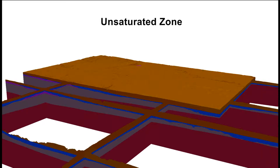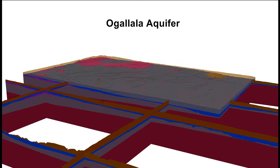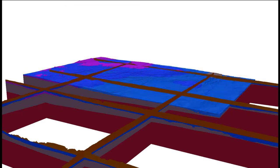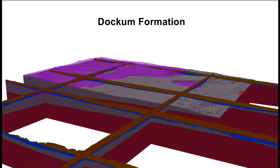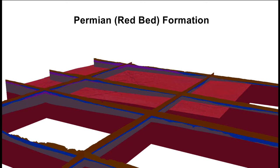Again, the unsaturated zone solid, shown in brown, represents the layer from the ground surface down to the water table. The Ogallala Aquifer is again shown in blue, followed by the Rita Blanca in purple, the Dockum in gray, and the Permian, or Red Bed Formation, in red.